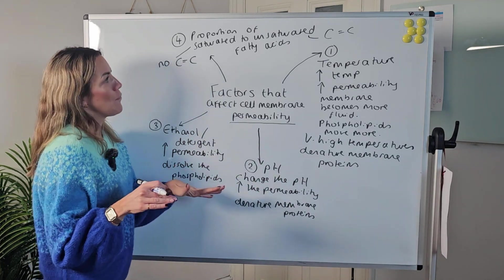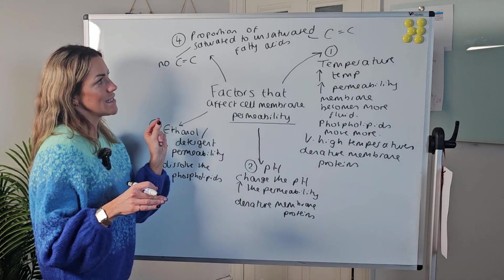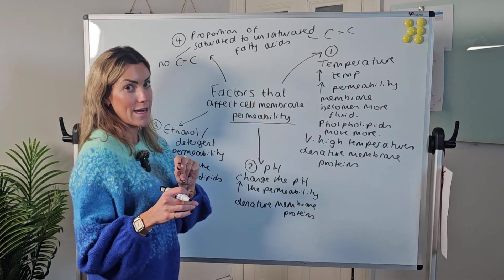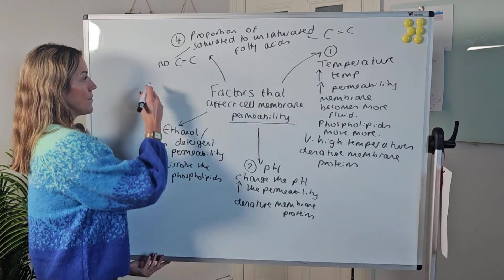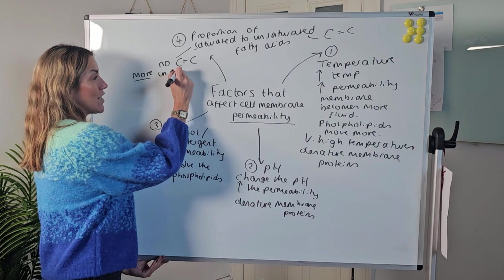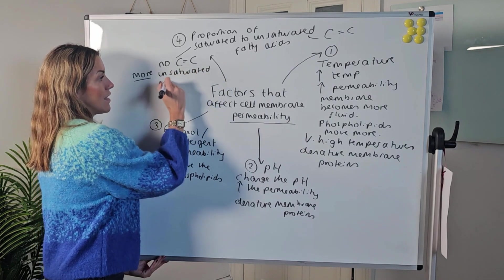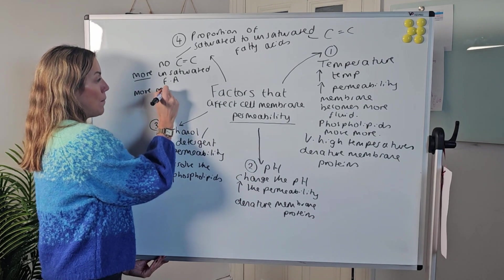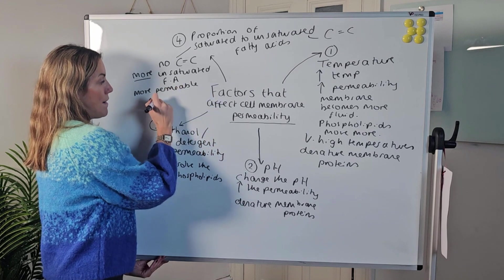Going back to the topic, the proportion of saturated to unsaturated does affect the permeability of the cell surface membrane. If you have more unsaturated fatty acids, you're going to have a more permeable membrane.